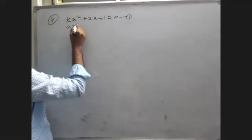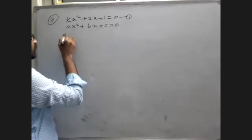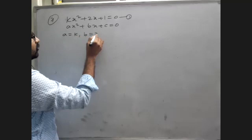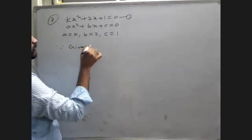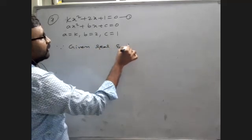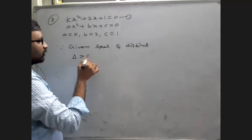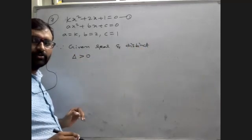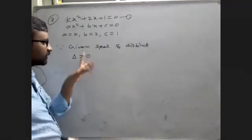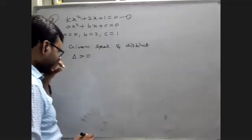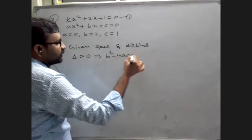Comparing with Ax² + Bx + C = 0, A = K, B = 2, C = 1. Since the roots are real and distinct, Delta > 0. So B² - 4AC > 0, meaning 2² - 4×K×1 > 0.